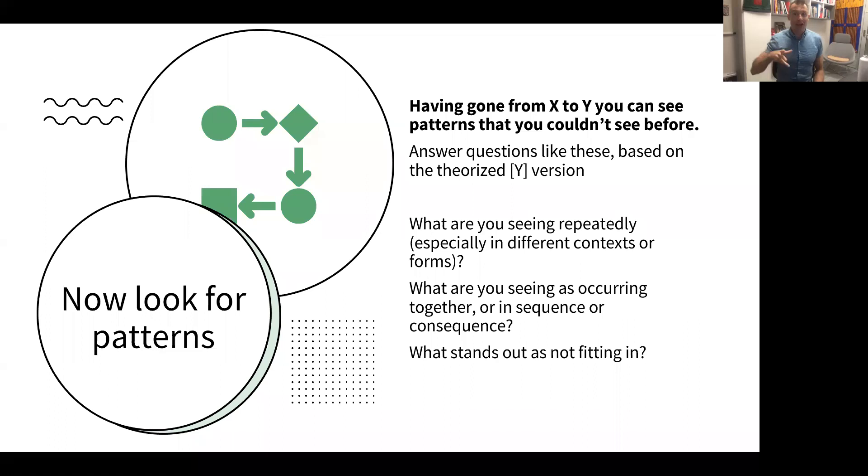Now, once you've done that, you can do important things. You can see patterns that you couldn't see before, patterns that exist between those understandings of the phenomenon through y, through the theory. So you might be saying, what are you seeing repeatedly, for example, particularly in different contexts, or in different forms. And that might rely on seeing things as the same, when in everyday, through everyday eyes, you might have seen them as differently. You might see things as occurring together, in sequence, or in consequence for one another, through having labeled them and understood them in a particular theoretical way.